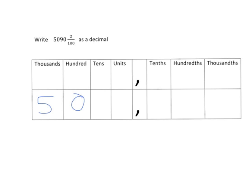Five thousands, no hundreds, nine tens, no units. There aren't any tenths in this case, there are two hundredths and no thousandths.